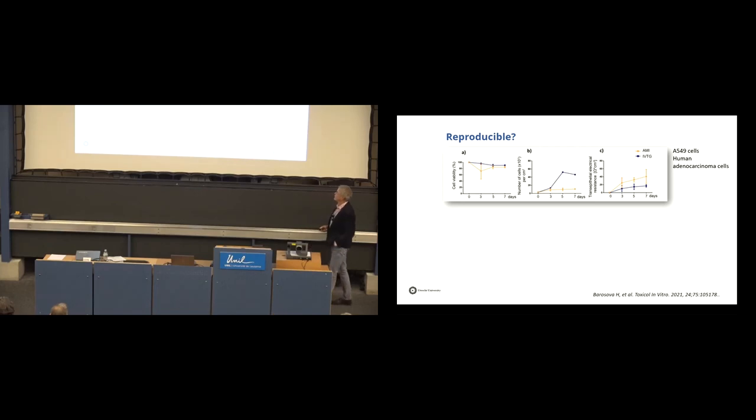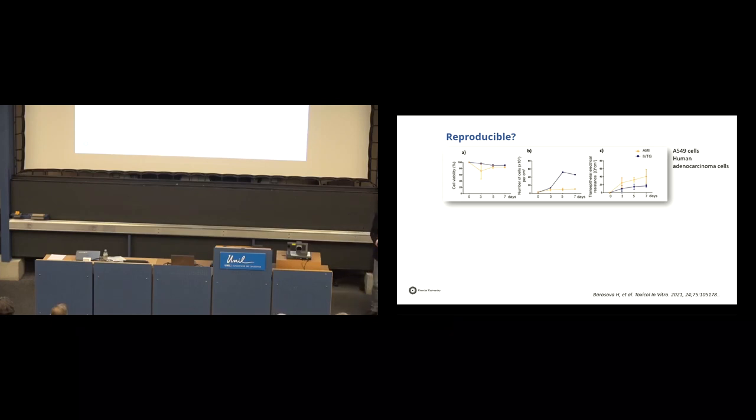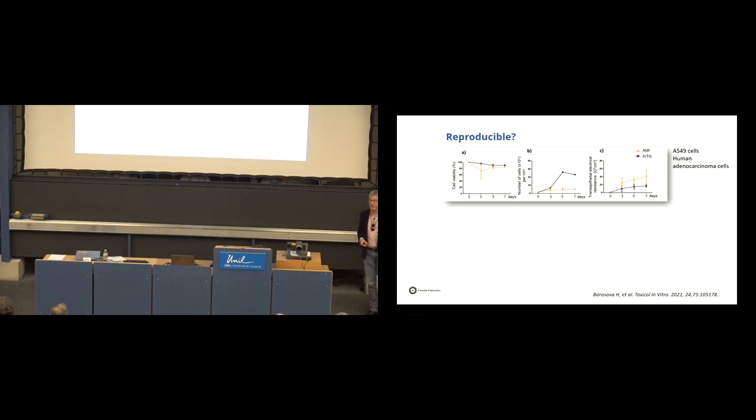And these are the results, just the basic cell properties. Cell viability was different. Number of cells per square centimeter was different. And the trans-epithelial electrical resistance of the cells of the two cultures were different, significantly different. And then they started to investigate what's the problem behind that, what is causing this difference.